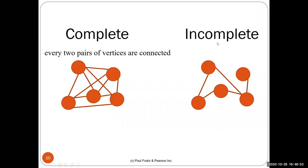In a complete graph, every single node has a direct edge to every other node — every pair of vertices is connected. An incomplete graph has missing edges. The interesting problems are usually incomplete graphs, because you need to find paths longer than one hop.